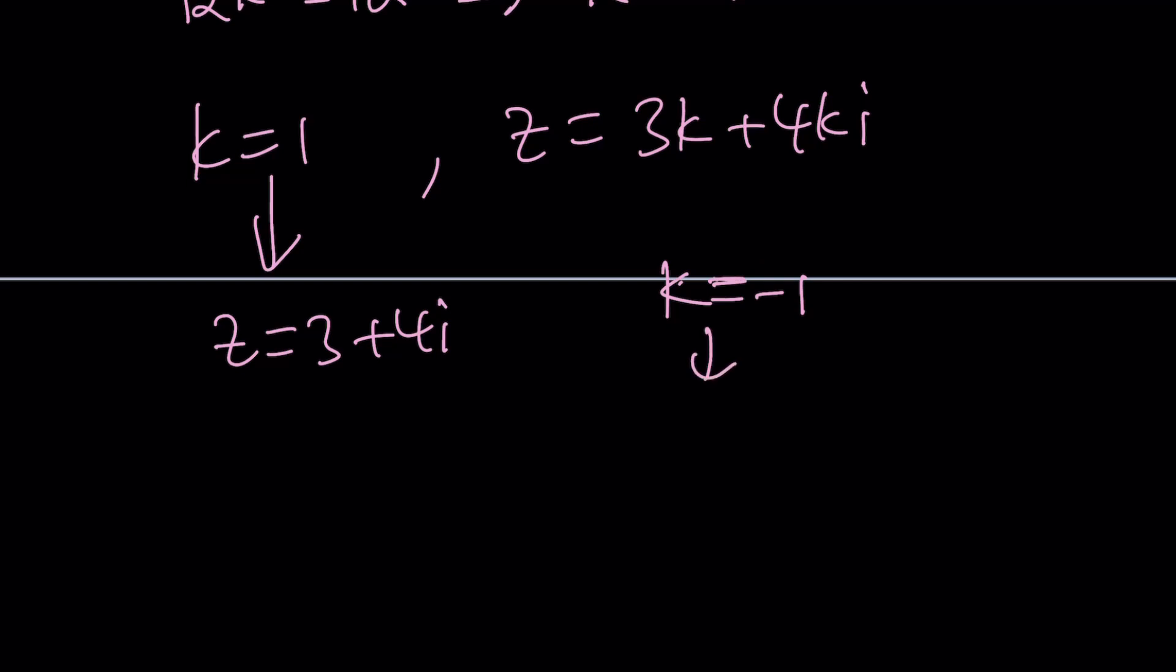And if k is equal to negative 1, if k is equal to negative 1, then Z becomes negative 3 minus 4i. And again, we got the same solutions as before.